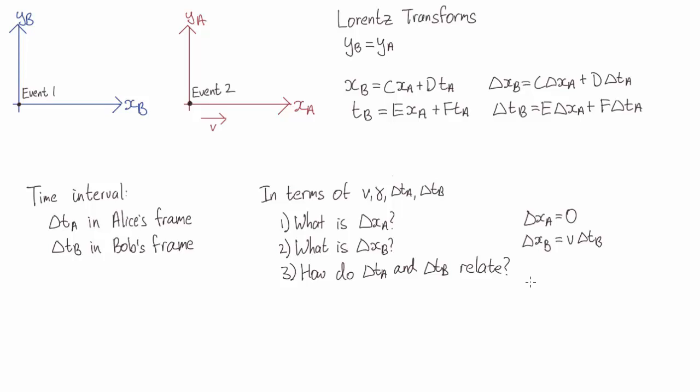Here the situation is similar. Both events happen in the same place in Alice's frame, but in different places in Bob's frame. And it's under this situation that we have delta t_b equals gamma delta t_a.